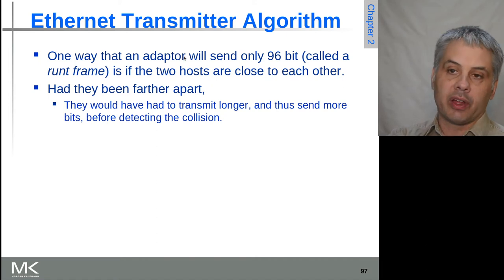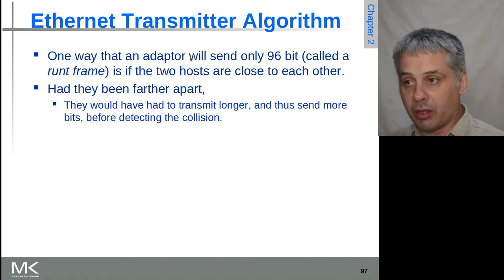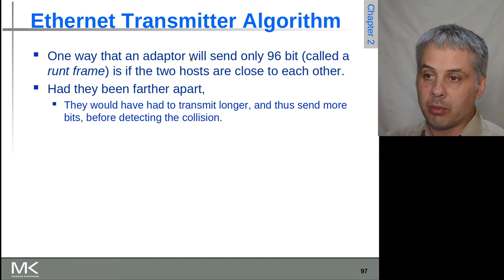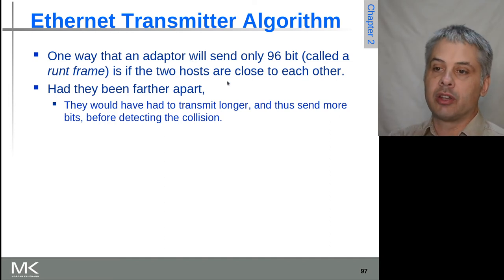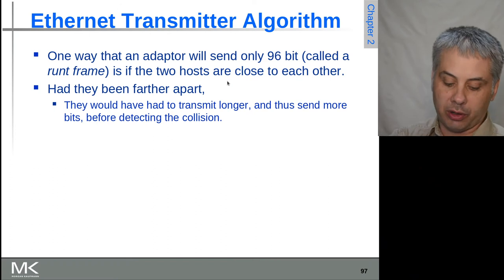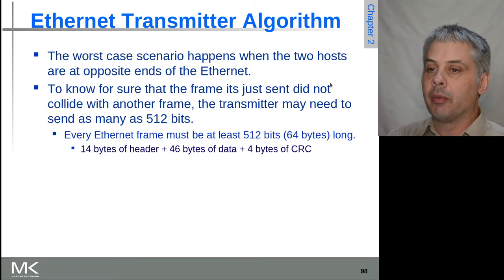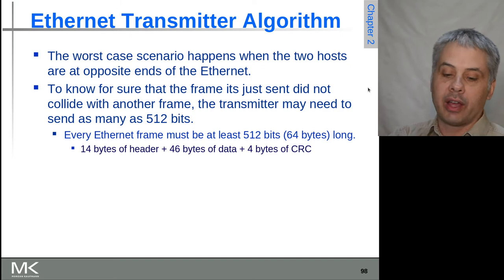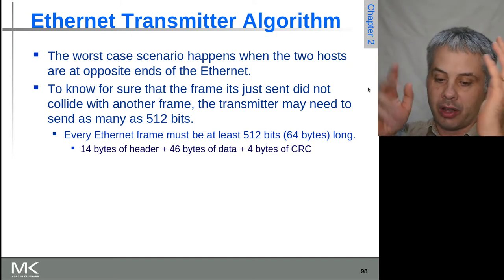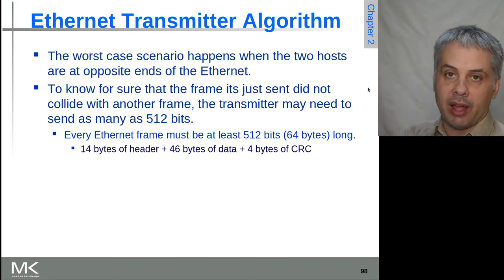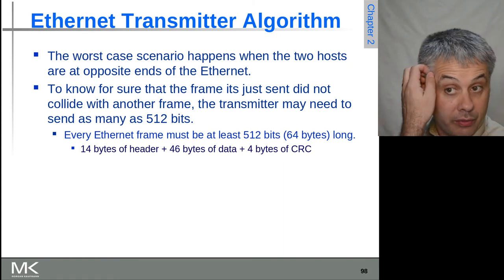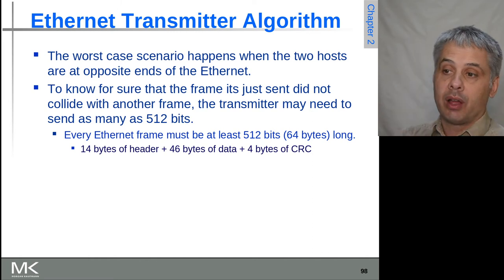If they're really close to each other, that's when you can get this 96-bit runt frame sent. If they're further apart, then you'll end up with more bits being sent before the collision. In the worst case scenarios, if they are the opposite extremes, and if you look back to the original Ethernet where you could have potentially a couple of kilometers, you could end up with several hundred bits being sent.